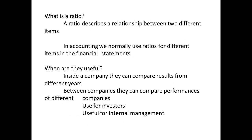A ratio is a term that describes a relationship between two different items. We simply divide the quantity for one item by the quantity for the second item, then usually multiply by 100 to give the answer as a percentage. Ratios are popular in accounting because they help present more information from the financial statements and are useful tools to compare results for different years or between different companies.